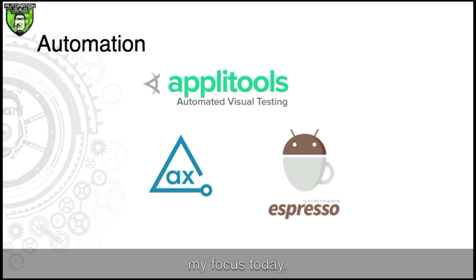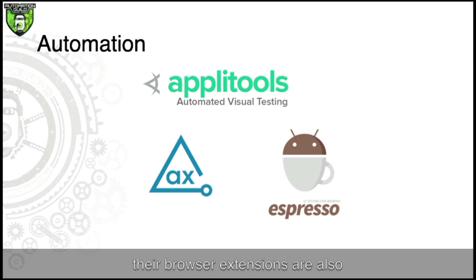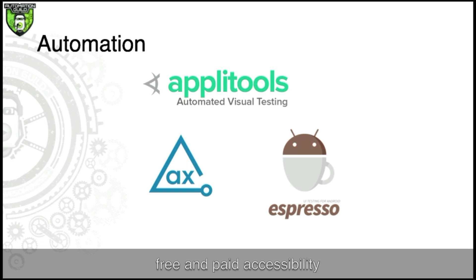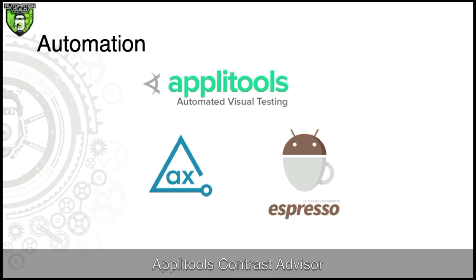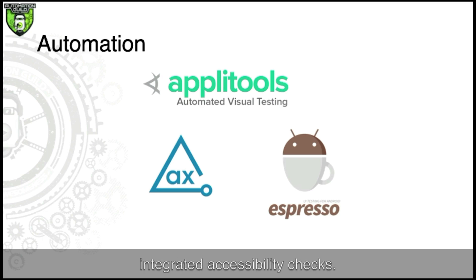Automation accessibility testing is my focus today. You might be wondering why I listed some semi-automated tools under manual — while many of those tools can be fully automated, their browser extensions are also widely utilized in manual testing. This slide showcases three logos: Axe, Applitools, and Espresso. Deque's open-source Axe core library powers a considerable portion of free and paid accessibility tools and automation frameworks. Applitools' Contrast Advisor validates minimum color contrast ratios for text and graphics and can be integrated into existing automation frameworks. Espresso is an Android UI testing framework that has integrated accessibility checks.